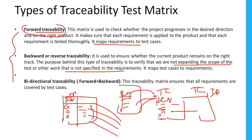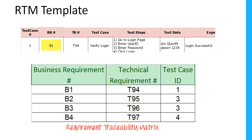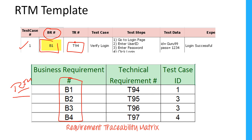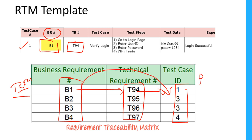So forward traceability maps test case IDs to requirement IDs, while backward or reverse traceability maps requirement IDs to test case IDs. Bidirectional traceability is a combination of both, ensuring all requirements are covered by test cases. The RTM template contains a business requirement ID, a technical requirement ID, and corresponding test case IDs with test steps and test data. If we start with a business requirement and add test cases, that is forward traceability; if we start with a test case ID and map to requirements, that is backward traceability.